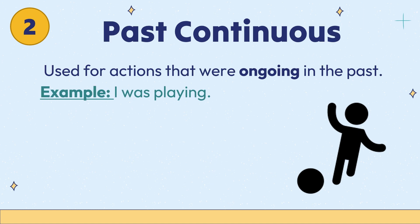Second is past continuous. It is used for actions that were ongoing in the past. For example: I was playing.